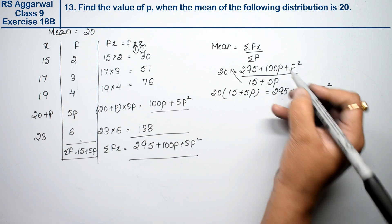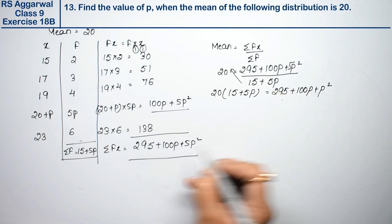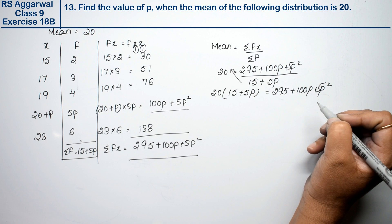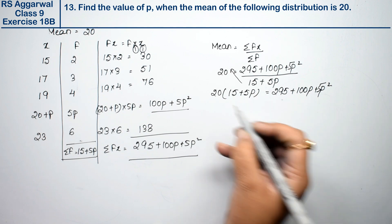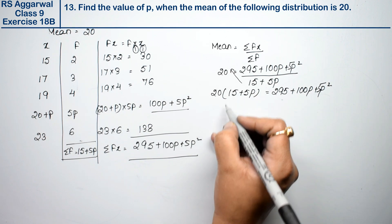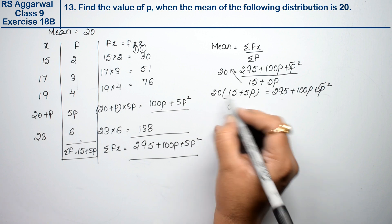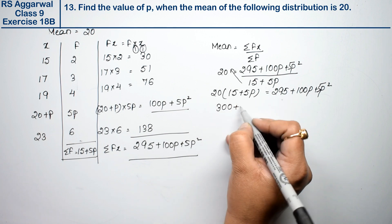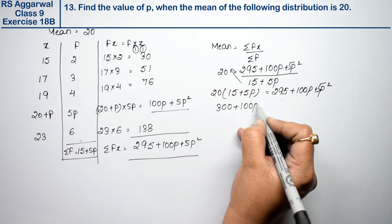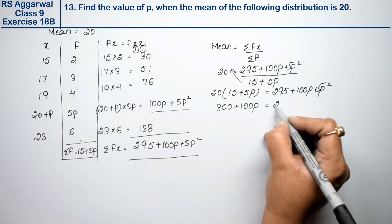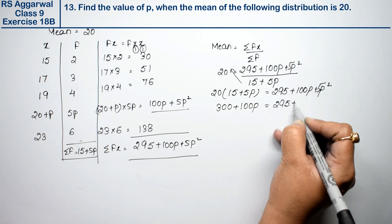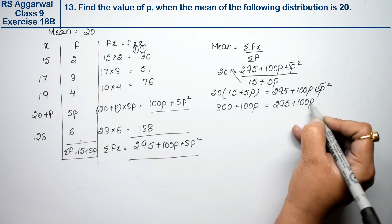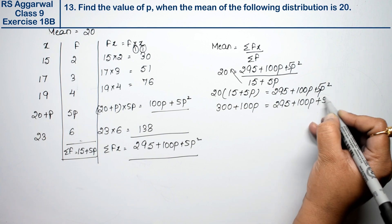Sorry, this should be 5p square. See, it's 5p square here. Now multiplying: 20 times 15 is 300, and 20 times 5p is 100p. So 300 plus 100p equals 295 plus 100p plus 5p square.